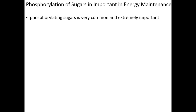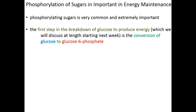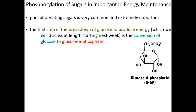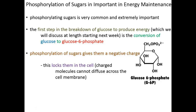Redox reactions are not the only things that can happen to sugars. We can also phosphorylate them. In fact, phosphorylating sugars is probably the most important and certainly the first critical step of metabolizing glucose. The very first step in glucose breakdown is its phosphorylation at its sixth carbon, creating glucose 6-phosphate. This will be the first step of the process we talk about in the next lecture. The reason this is done is for two reasons.